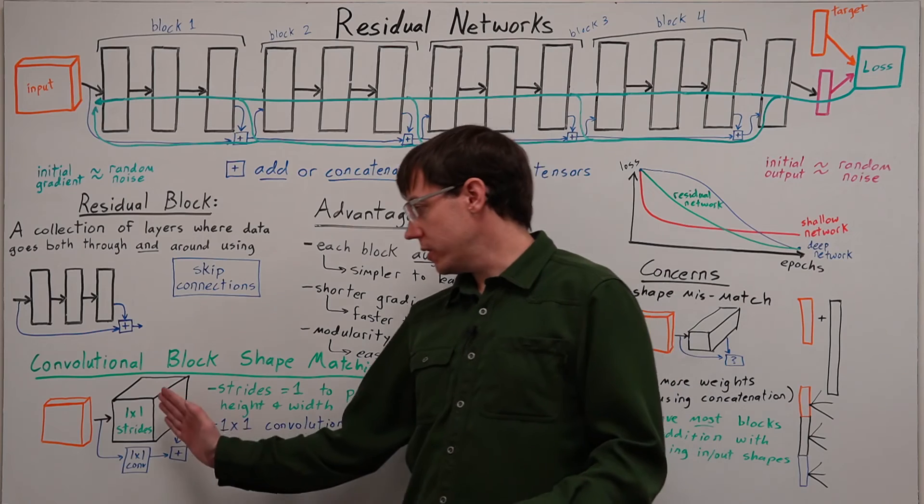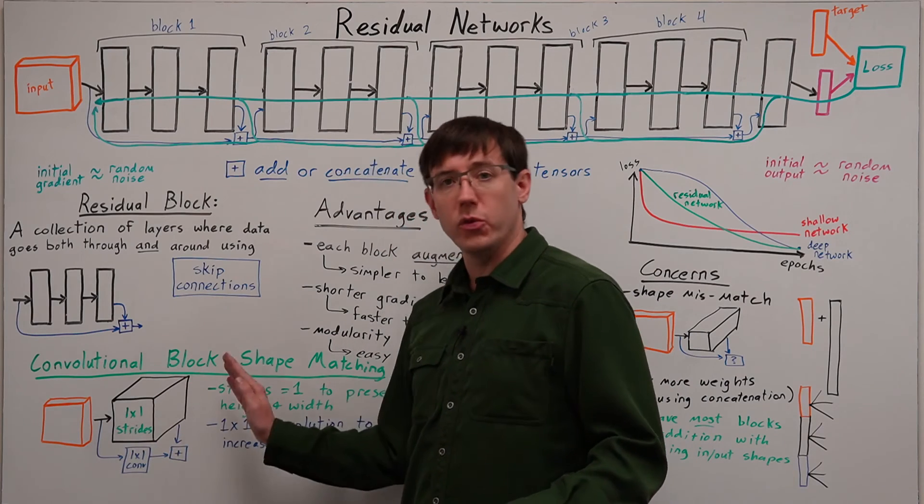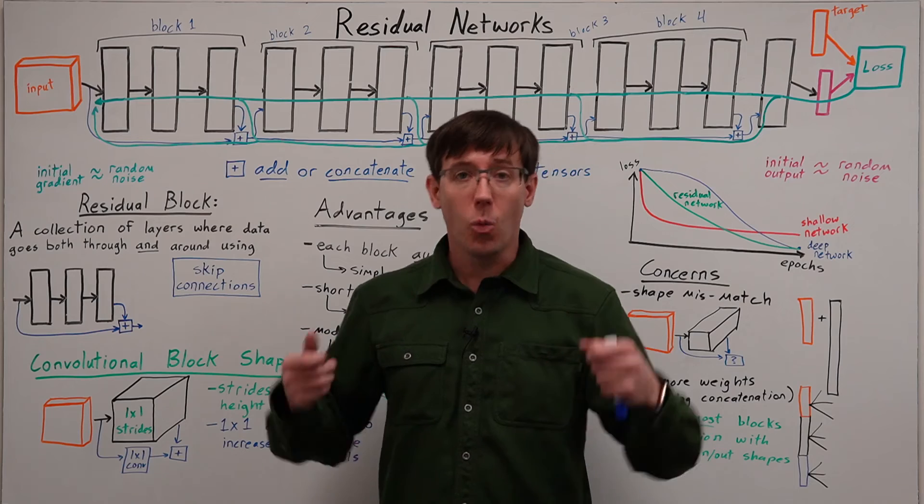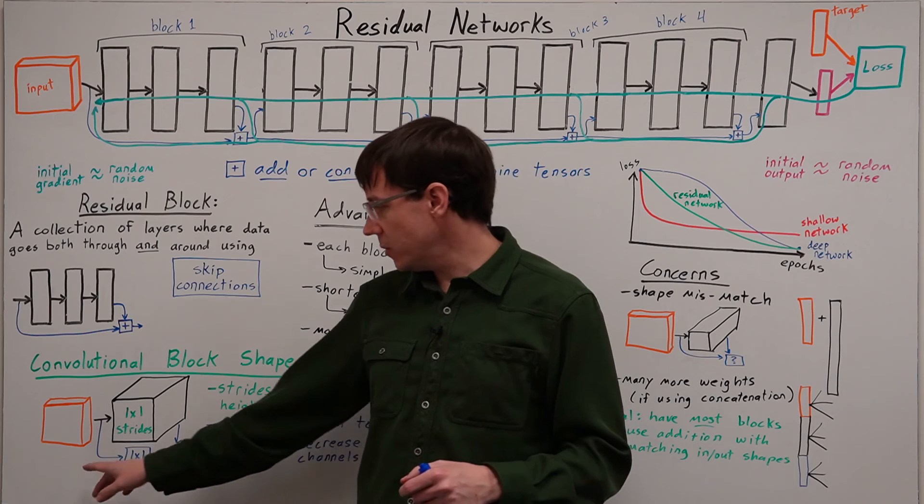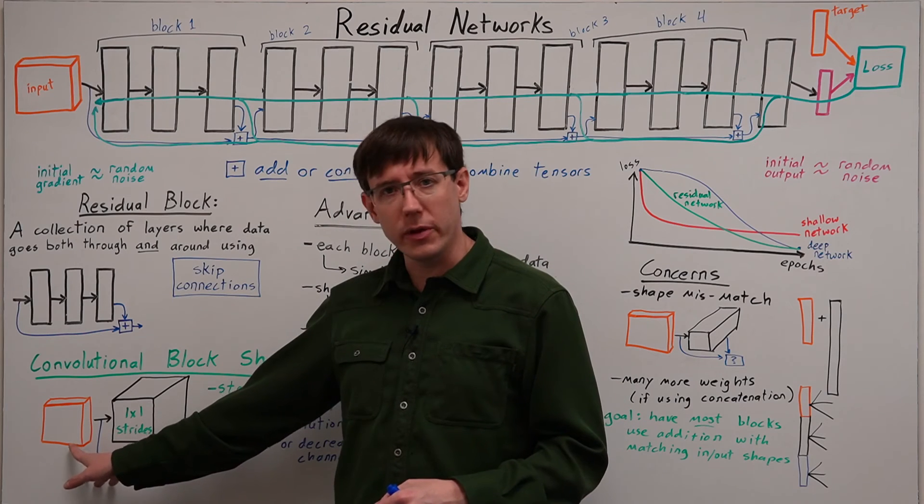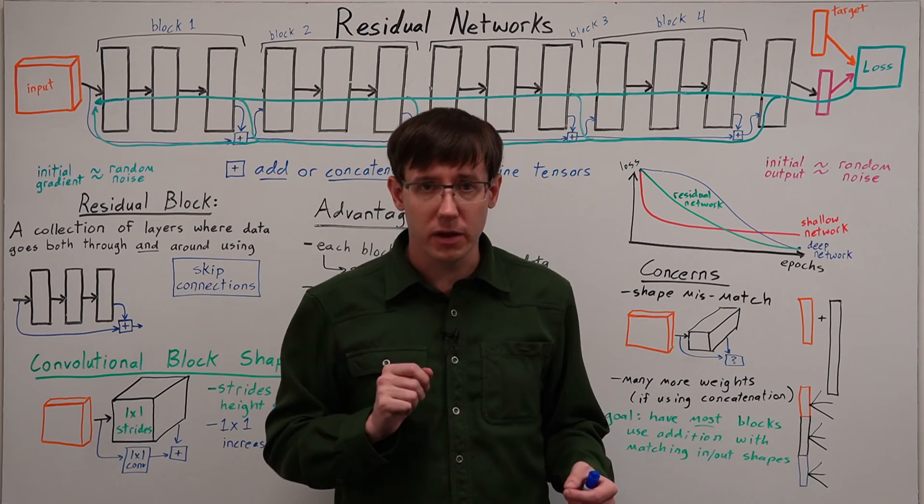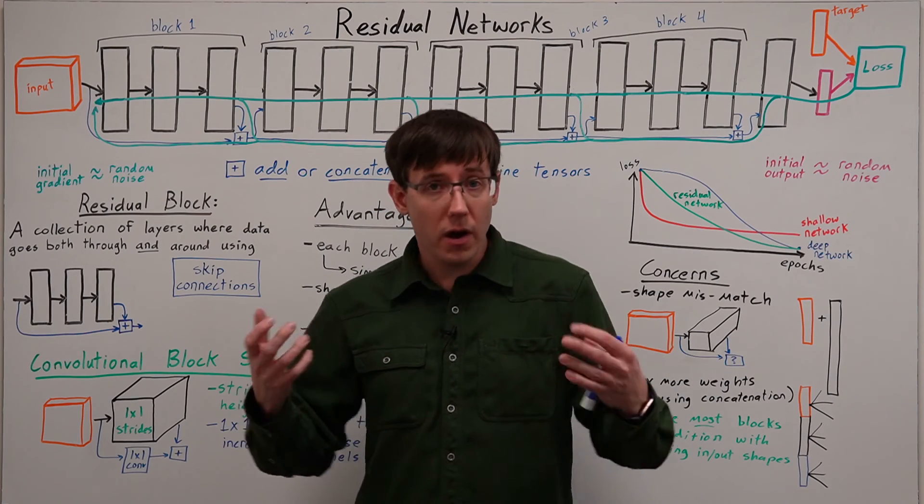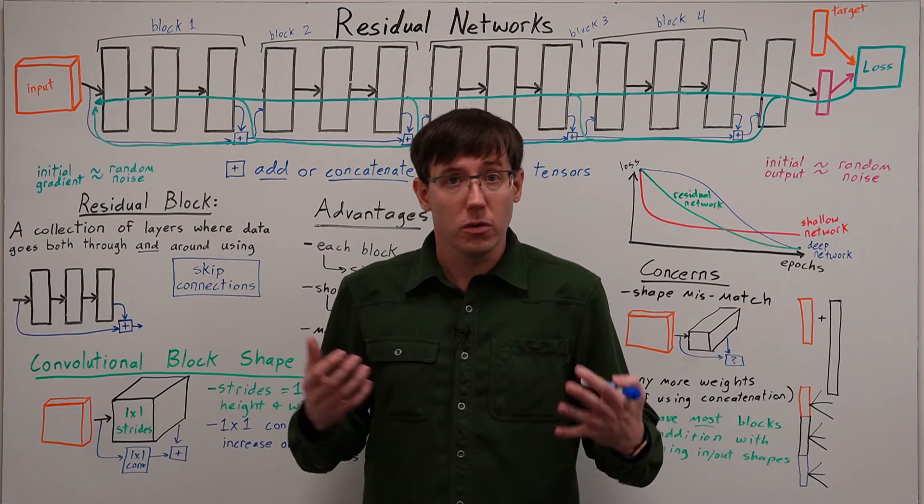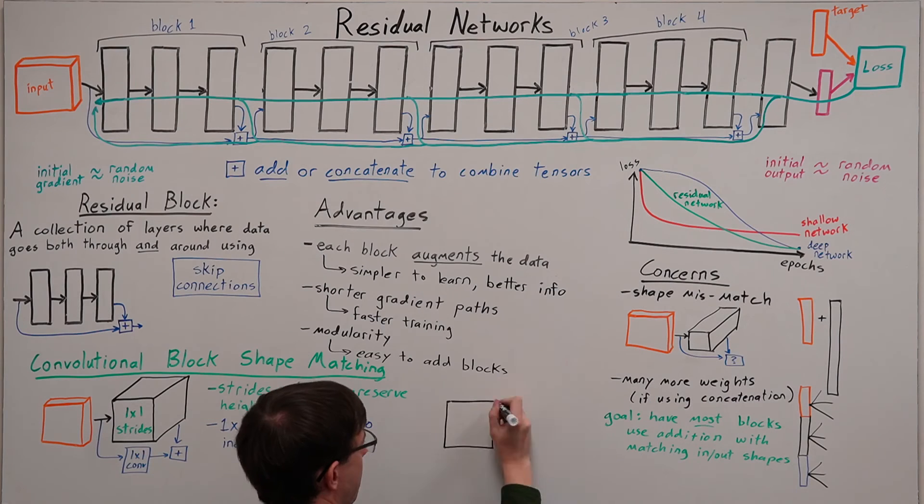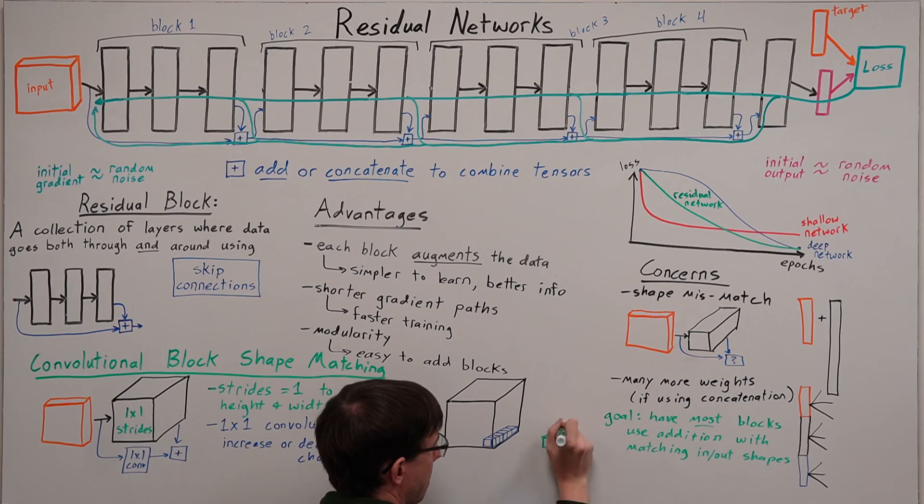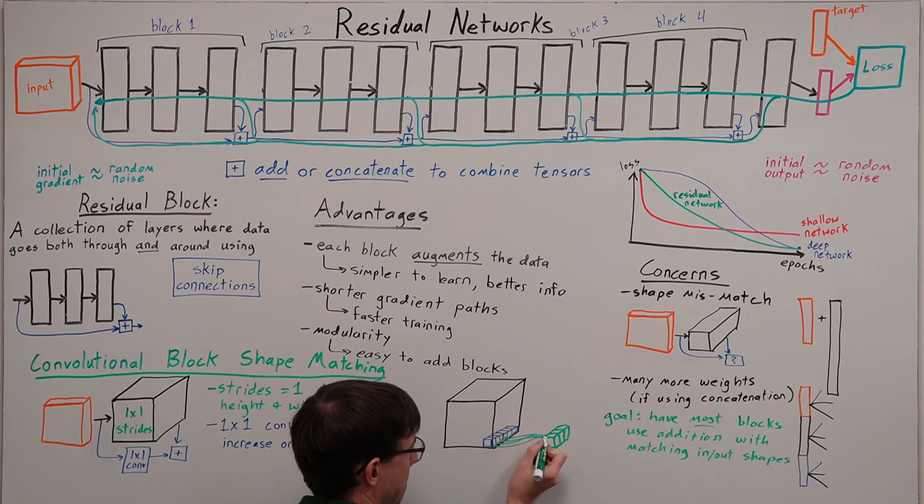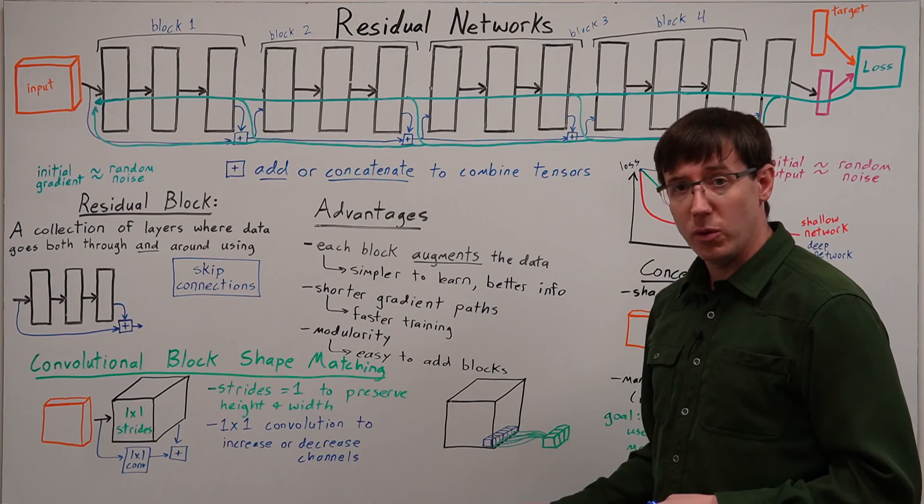But if we also want the channels dimension to match up, we can achieve that using 1x1 convolutions. Well, 1x1 convolutions might seem kind of silly, since they get their inputs from only one pixel of the image, but let's draw an illustration of what such a neuron would compute. If we perform convolution with a 1x1 kernel, then we'll get an output block with the same height and width as the input block.